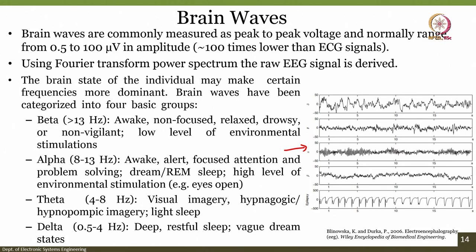Theta is 4 to 8 Hz and it is associated with visual imagery and light sleep — hypnagogic imagery — when you start sleeping, light sleep. Delta shows restful sleep, deep sleep, and wake-dream states. When a person is in a deep restful sleep, the delta signal will be between 0.5 and 4 Hz. So these are the theta signals, these are the delta signals, and these are the beta signals.